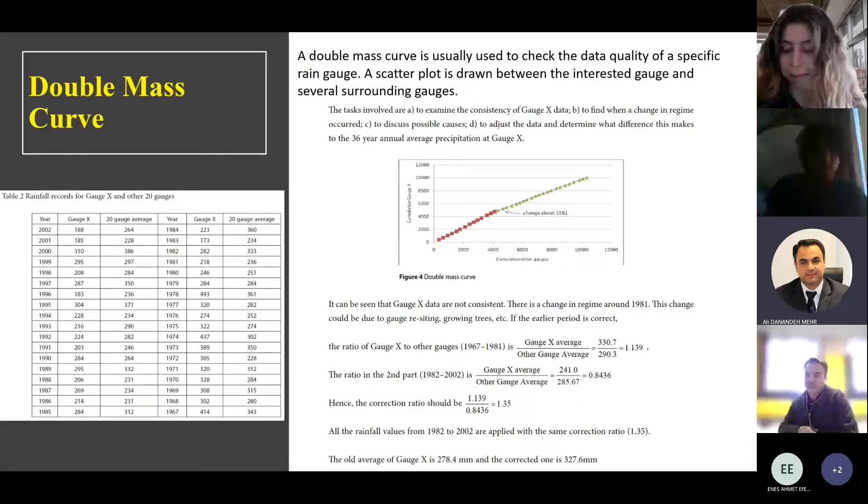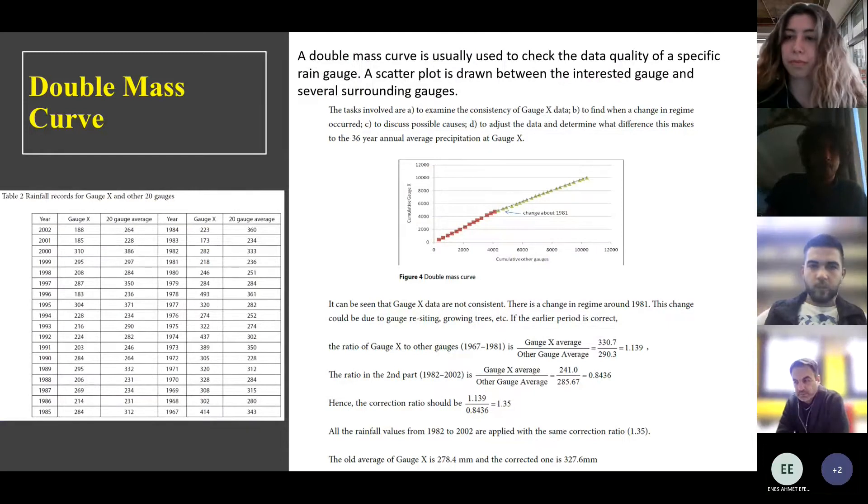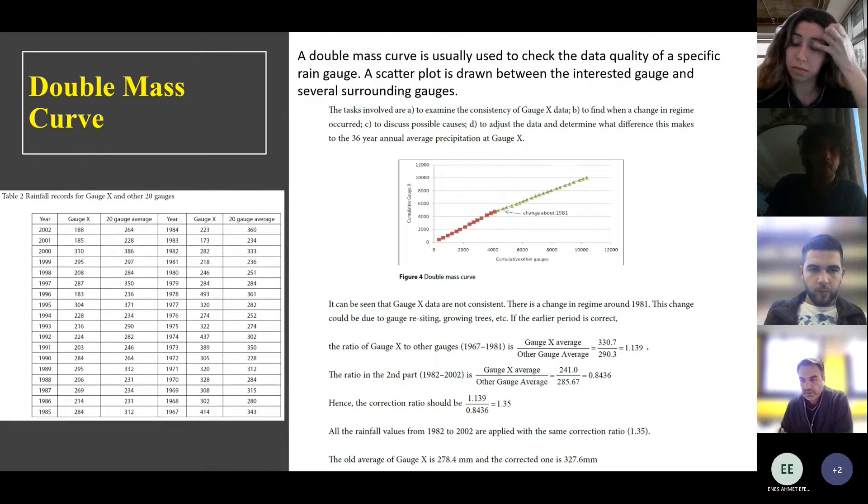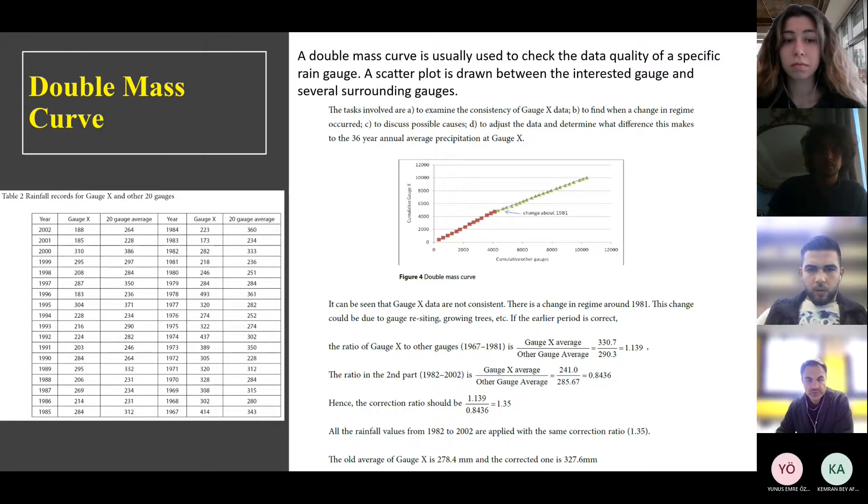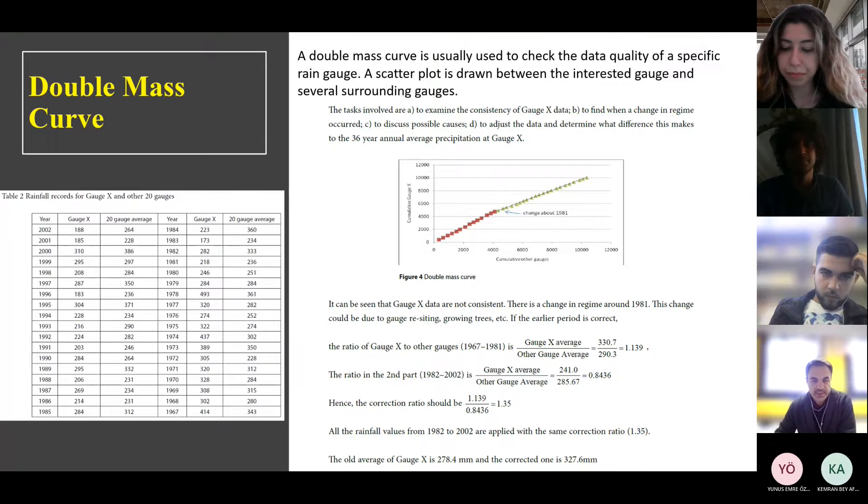Alright, so far we talked about precipitation data and we saw how we can use point measurements to create aerial rainfall measurements. But at the beginning of the previous lecture I talked about potential errors in some data measurements. It could be human-made errors, it could be instrumental error and so many other things.